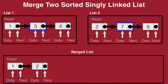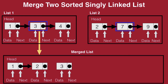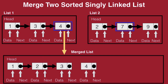On repeating the process, we see that the node with data 3 in list 1 is lesser. So we bring down 3 into our merged list and we establish a connection from next of 2 to 3. Now that 3 has been brought down, we advance to the next node, which is 4. On comparing 4 and 7, we see that 4 is lesser, so we bring down 4. Once we bring down 4, we establish a connection from the next of 3 to 4.